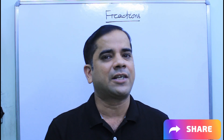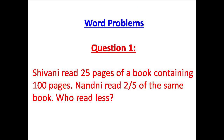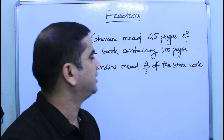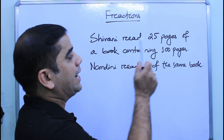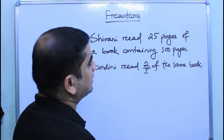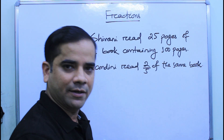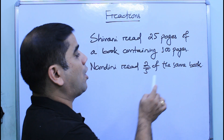Now we are going to discuss some word problems. The first question: Shivani read 25 pages of a book containing 100 pages. Nandini read two-fifths of the same book. Who read less? As per the given data, Shivani read 25 pages of a book containing 100 pages, so the number of pages read by Shivani is given directly.